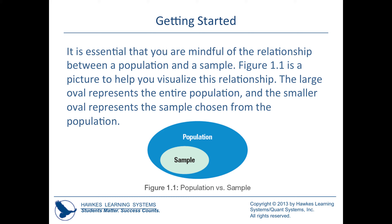When we elect political officials, our population of interest is typically all the people who are going to vote. For an election in Ohio, the population would be all the people who intend to vote. It would be impossible to ask every single person, so we take a sample — sometimes a good sample, sometimes bad — and use the information from the sample to generalize to the larger population.